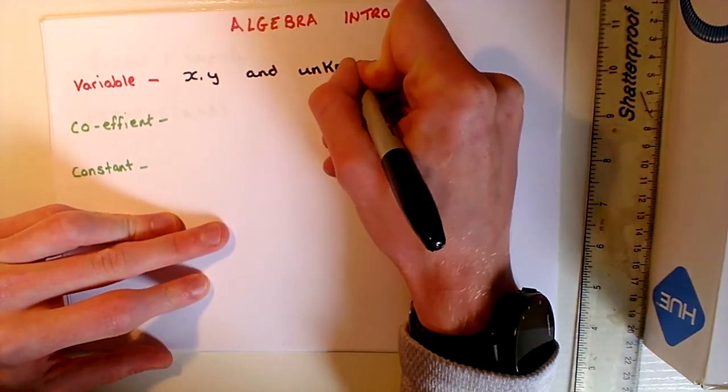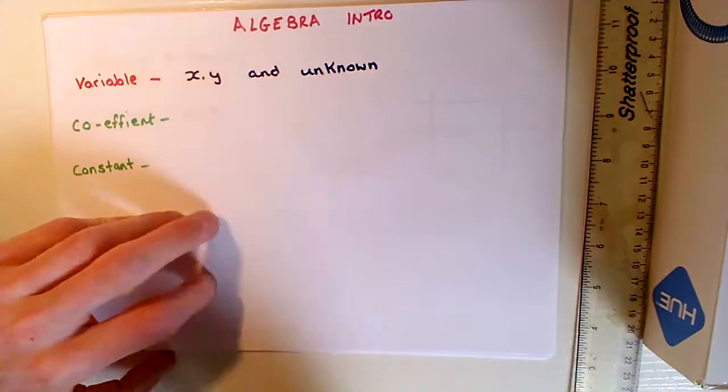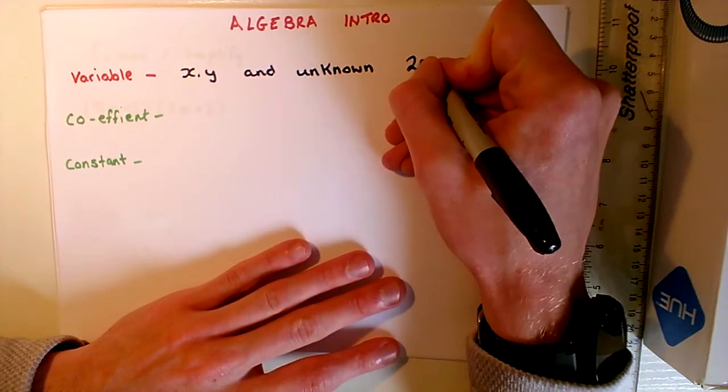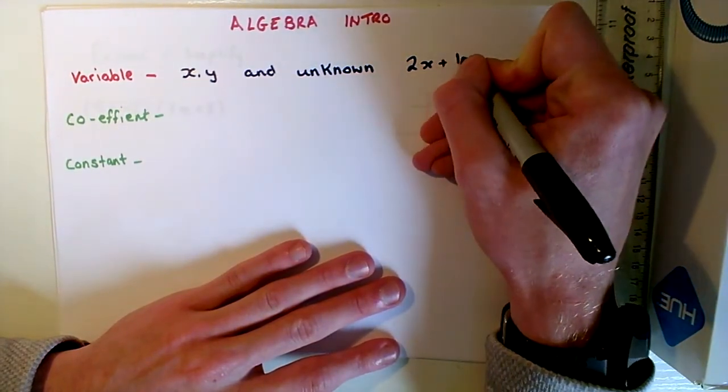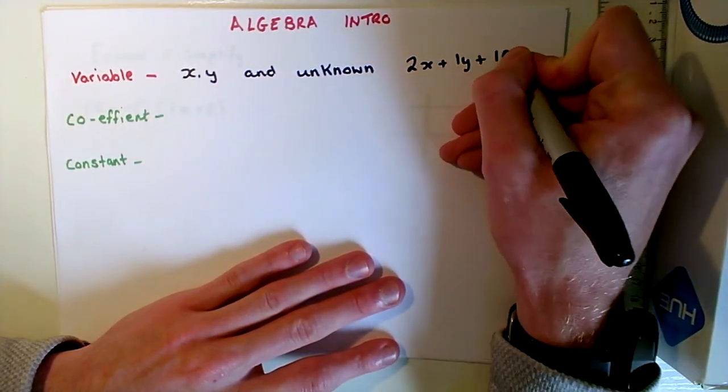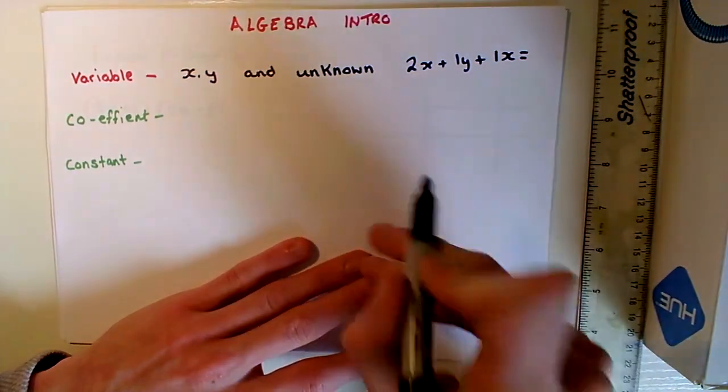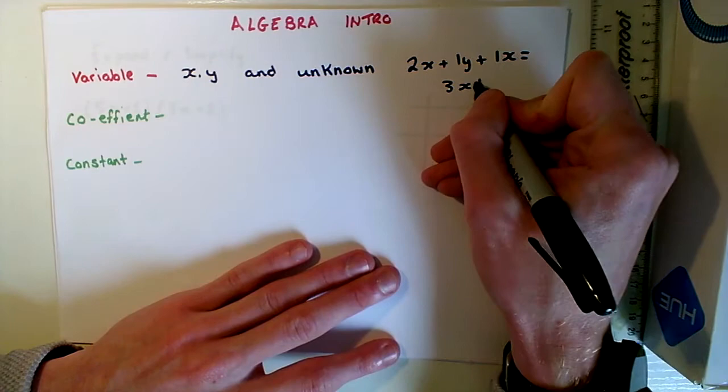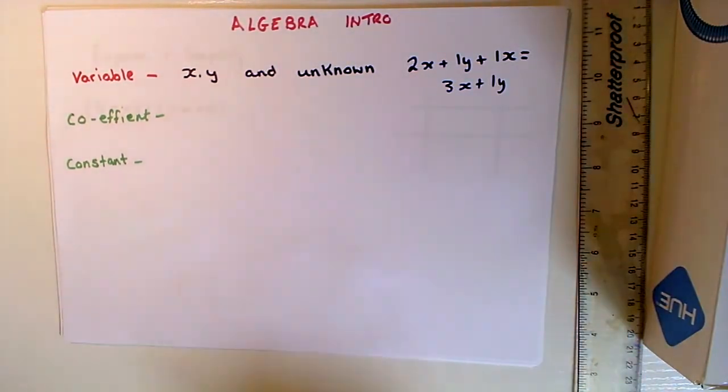Because it's unknown doesn't mean that it is something we can't find the value of. We typically can find the value of it. But what's important to remember with variables is that we can only have like with like. So if I have something like 2X plus 1Y plus 1X, well I can only combine my X values there and it becomes 3X plus 1Y. Like with like.